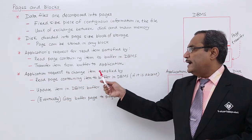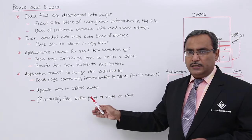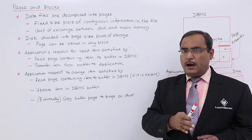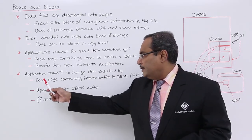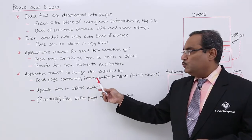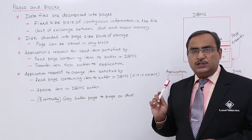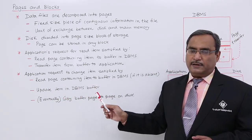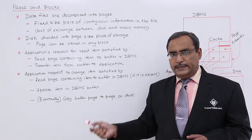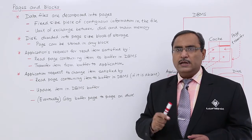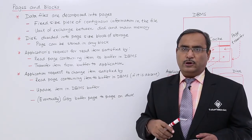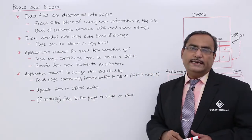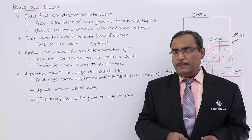For a write or change request, the data item being changed might or might not already be in memory. If it is absent, first read the page containing the item into the DBMS buffer. Then update the item in the DBMS buffer. At this point the disk copy and the buffer copy differ, so eventually copy the buffer page back to the page on disk for synchronization.